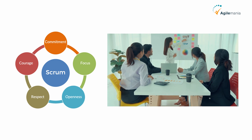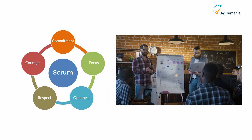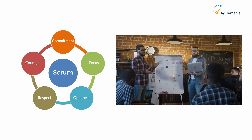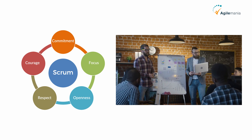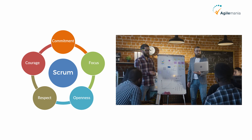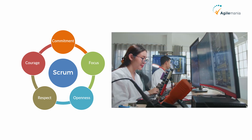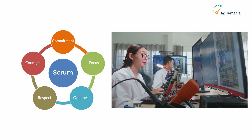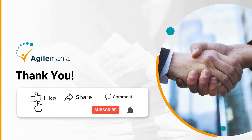By adopting these five Scrum values in product development, we eventually make our team follow the basic Scrum tenets. Following these values helps harmonize the team so they cooperate to create unique ideas for enhanced results, and in the process it also helps the team become self-organized and self-managed.